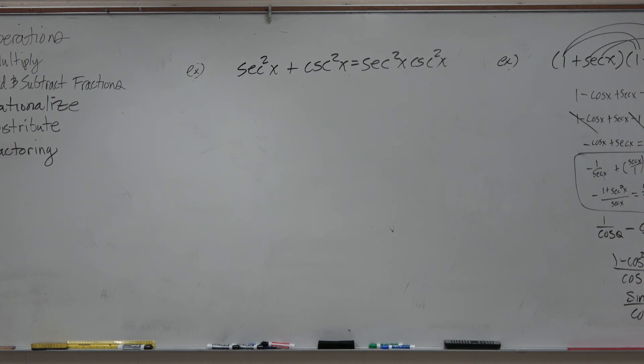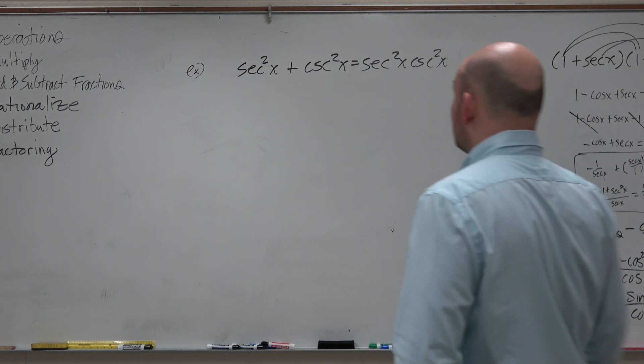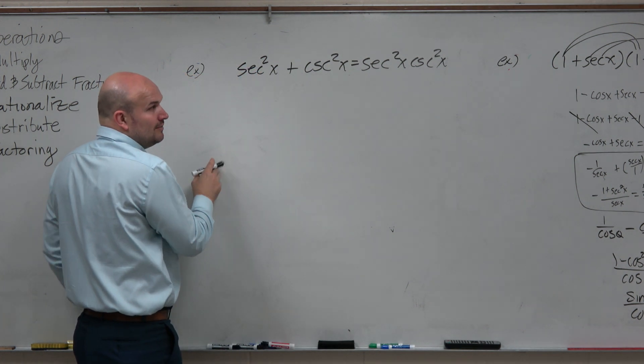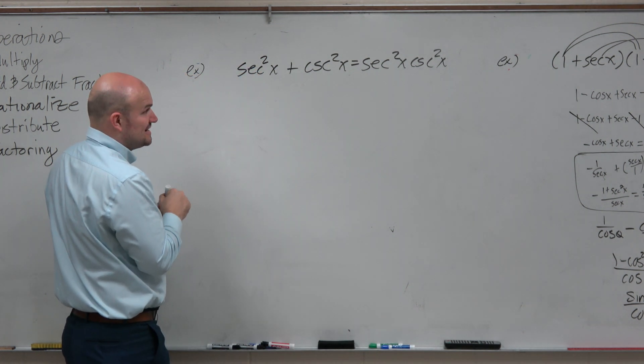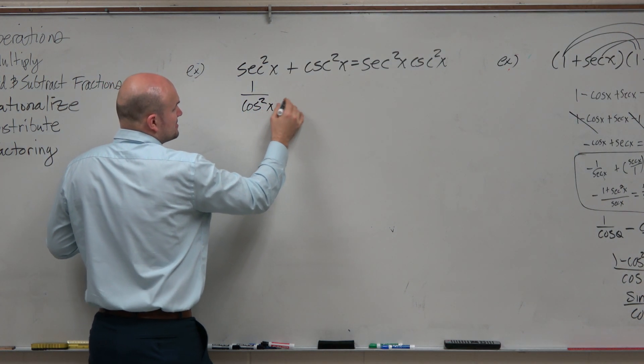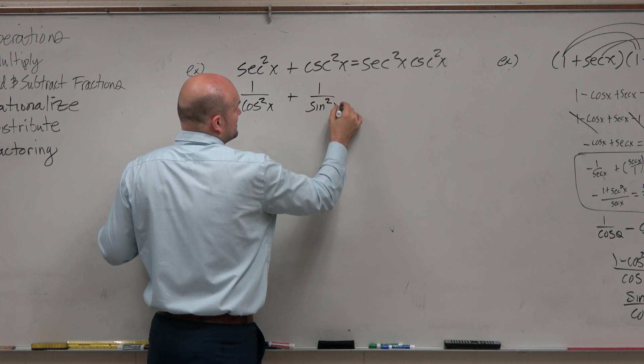We want to create fractions. We can't combine these as they are written right now. But if I write these in terms of sines and cosines, this would be 1 over cosine squared of x plus 1 over sine squared of x.